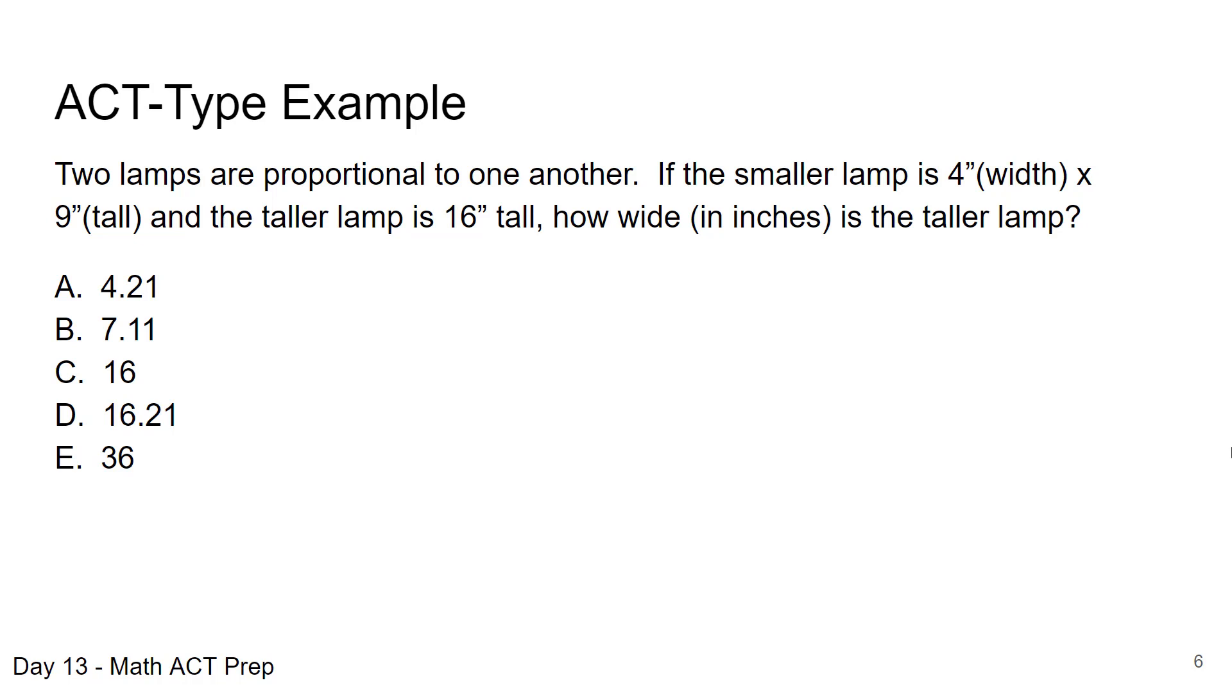The question says two lamps are proportional to one another. If the smaller lamp is four inches wide by nine inches tall and the taller lamp is 16 inches tall, how wide in inches is the taller lamp? Here we're talking about a proportion relative to size of these two lamps. We're given the dimensions of the smaller lamp and we have one dimension on the taller lamp, but we want to know what the second one is.